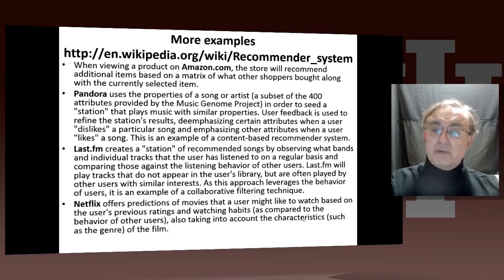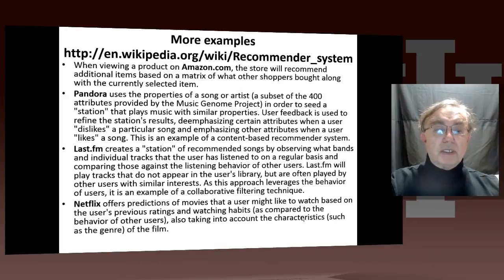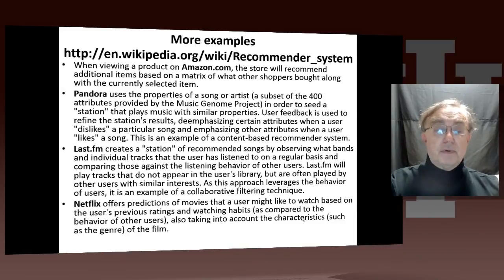Pandora takes a different type of approach. It uses the properties of the song or the artist, which is captured in the so-called music genome, which characterizes the different songs. They try to build a station that plays music with similar properties, assuming that what you've listened to is characteristic of what you like. You feed back as to whether they made a good choice, and then they adapt these algorithms. This is a property-based recommender system.